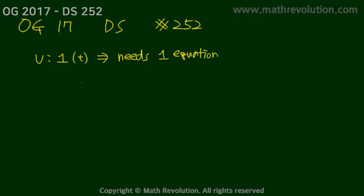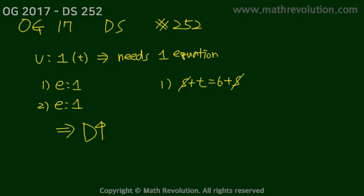Now, we know that each condition, 1 and 2, gives us one equation each. So statistically, choice D is the most likely answer. Let's look at condition 1. We have S plus T equals 6 plus S. We can cross out the S, so we're left with T equals 6. This is a unique answer, and therefore this condition is sufficient.